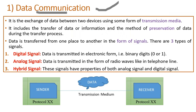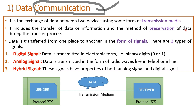Now let's understand the term data communication. It is the exchange of data between two devices using some form of transmission media. For example, if you are filling water from one tank to another, the water flows through a pipe. That process is called communication, and the pipe through which it flows is called the transmission media. It also includes the transfer of data or information and the method of preservation of data during the transfer process.